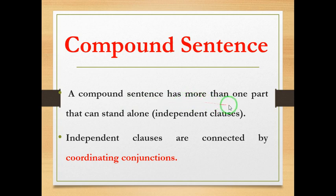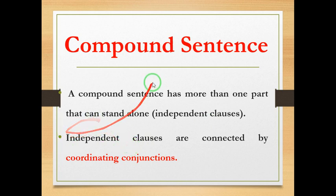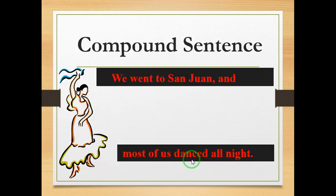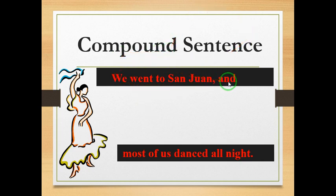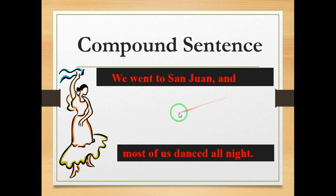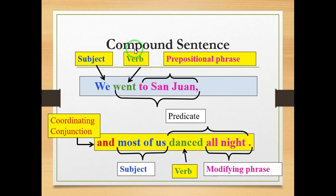A compound sentence has more than one part that can stand alone, which means two or more independent clauses. The independent clause is a part that can stand alone. So a compound sentence is when I join two complete sentences or two independent clauses together by a coordinating conjunction — and, but, or, for, nor, yet, so. We went to San Juan and most of us danced all night. Since I joined these two complete sentences with a comma and a conjunction, this makes it a compound sentence.